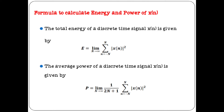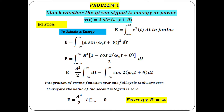This is regarding the formula definition. Let us see some example problems and their solutions. Problem 1: Check whether the given signal is energy or power. x(t) = A·sin(ω₀t + θ).